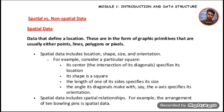Spatial data includes location, shape, size and orientation. For example, consider a particular square. Its center, the intersection of its diagonals, specifies its location. Its shape is a square. The length of one of its sides specifies its size. The angle its diagonals make with, say the x-axis, specifies its orientation.